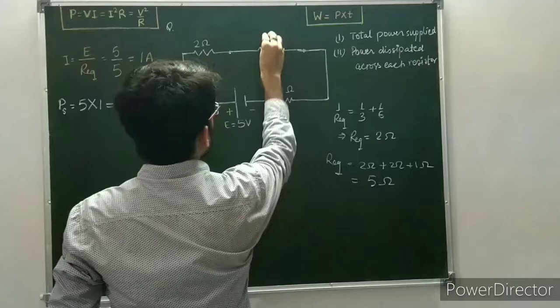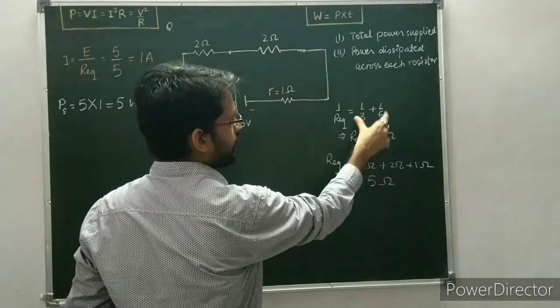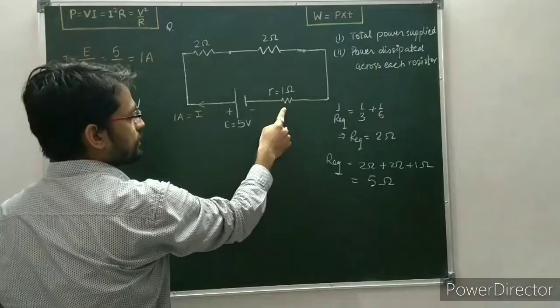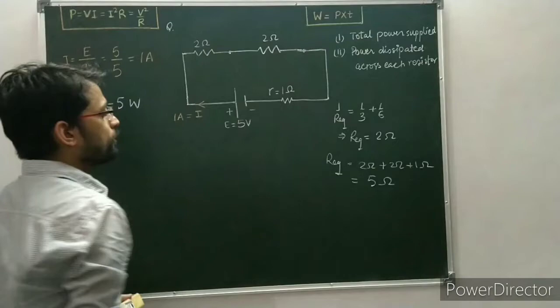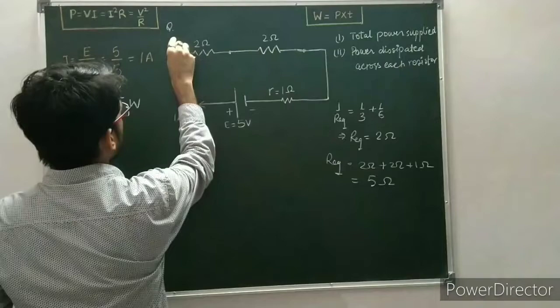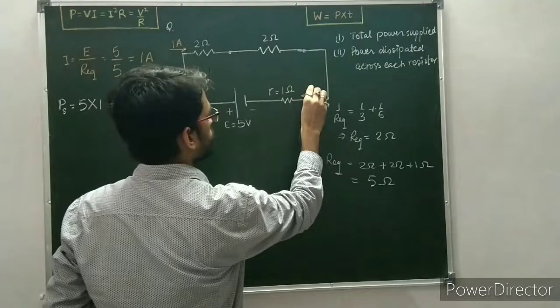The equivalent of the parallel combination is 2 ohm. Now the circuit has three resistors — 2 ohm, 2 ohm, and 1 ohm — connected in series. In a series circuit the current remains the same, so the current through the 2 ohm resistor and through the 1 ohm resistor is 1 ampere each.